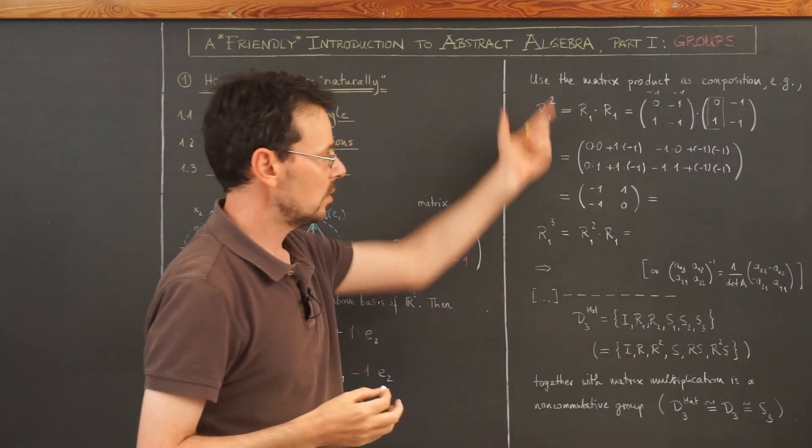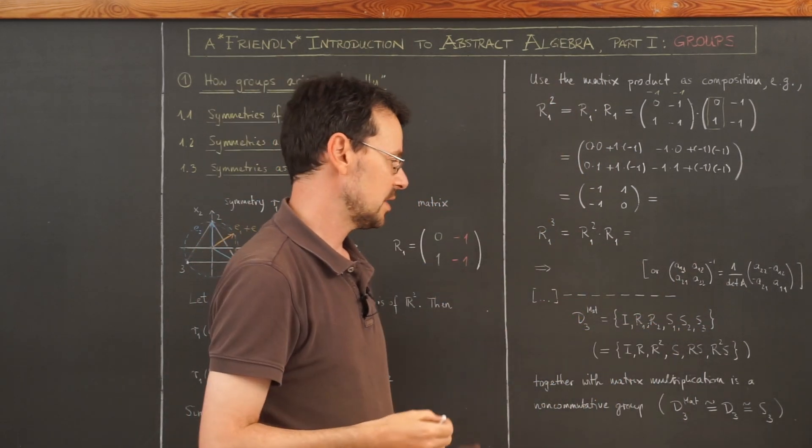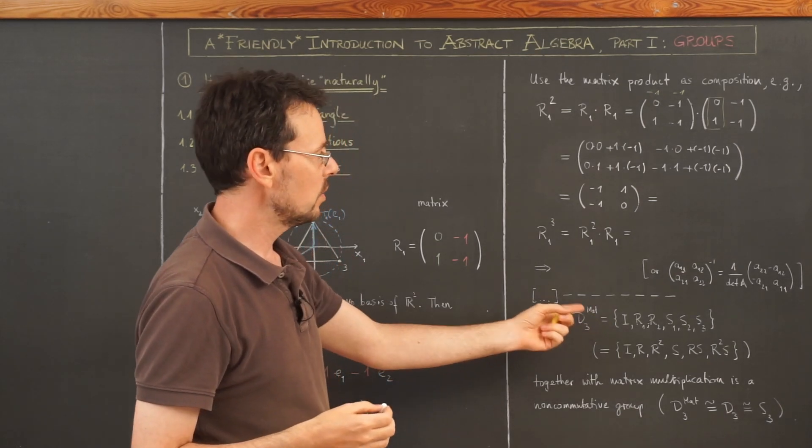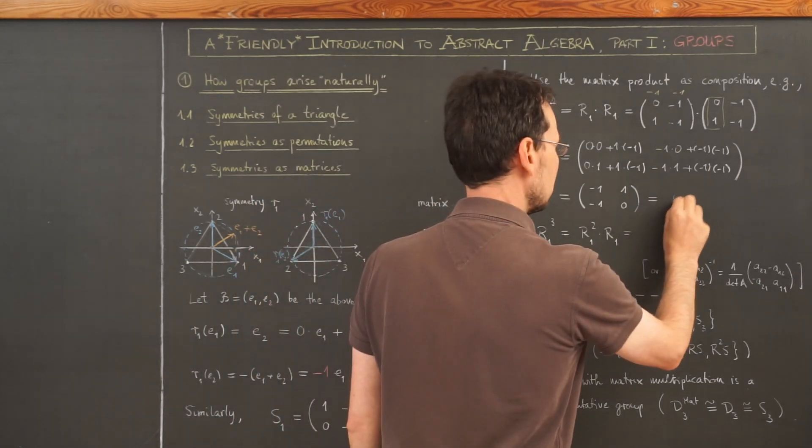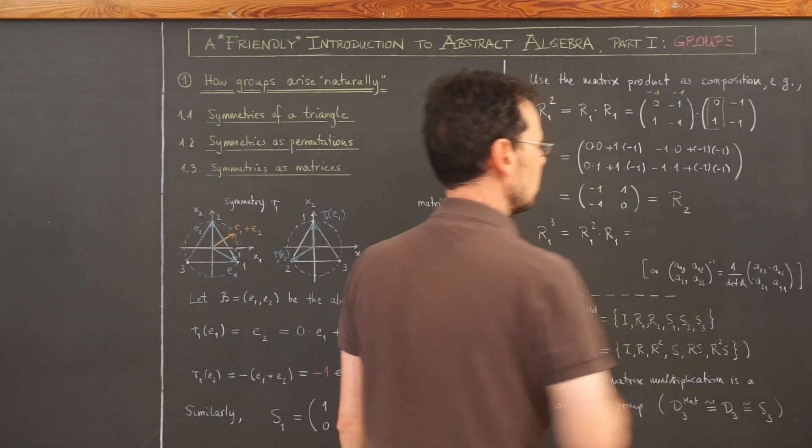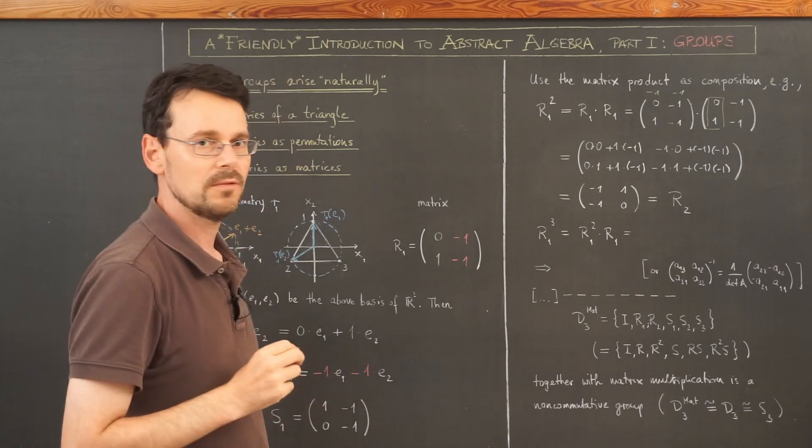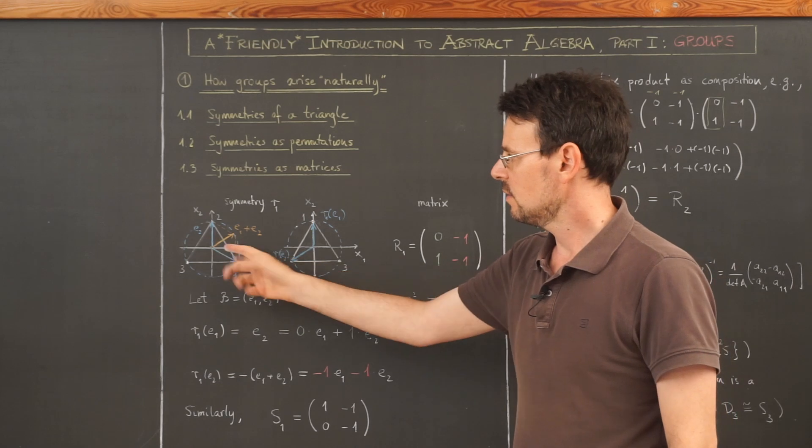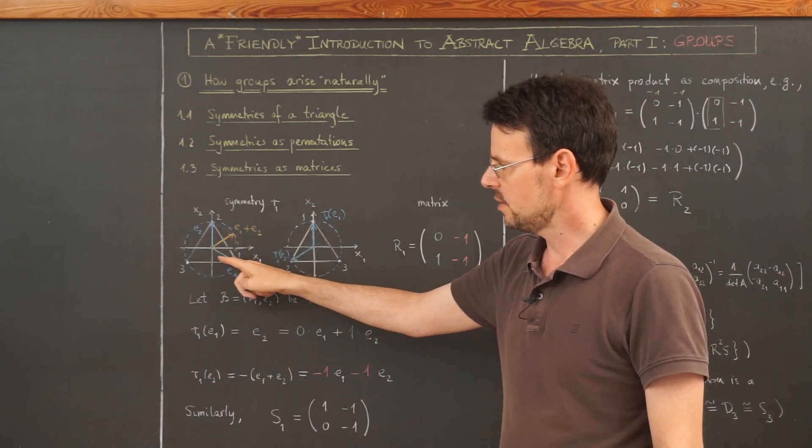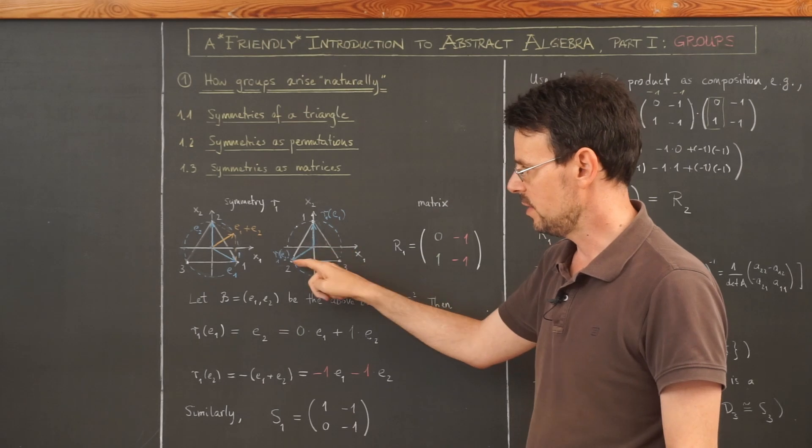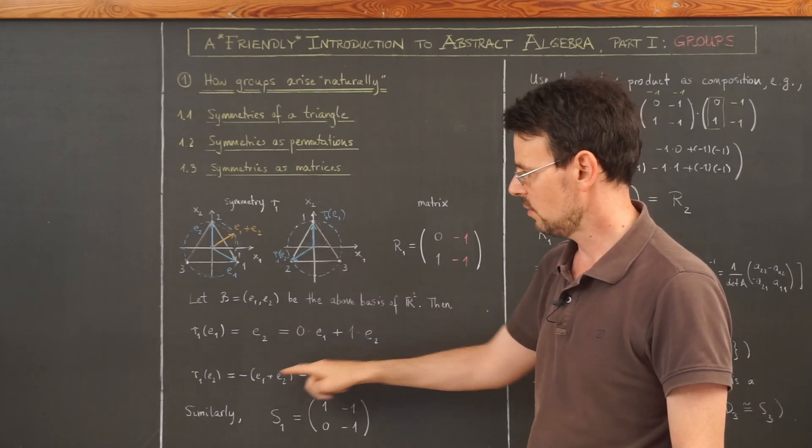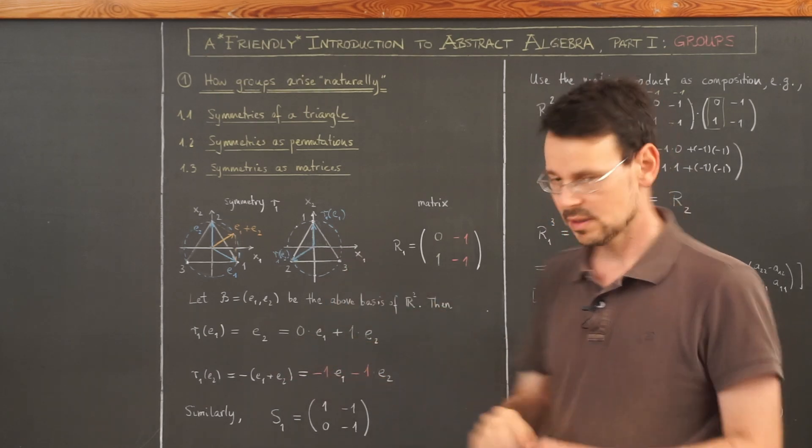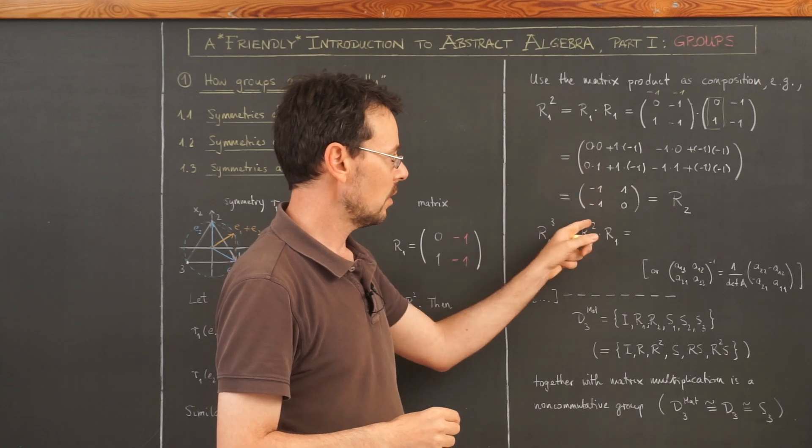If not, then this would not be an operation on this set because it would lead me outside of this set and we would have no chance that this becomes a group. But this here is actually the matrix that corresponds to the rotation by 240 degrees. Why? Well, if I rotate here the triangle by 240 degrees, this vector gets mapped to this vector. And we already know that this here is minus E1 plus E1 plus E2, or this.